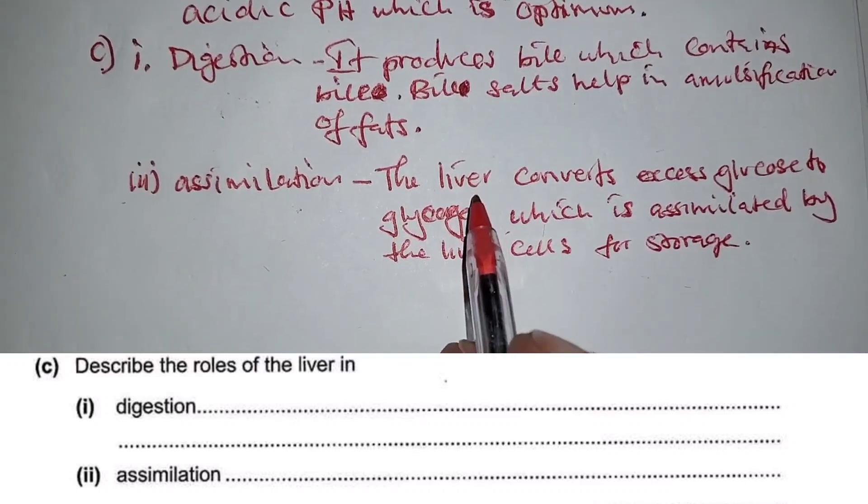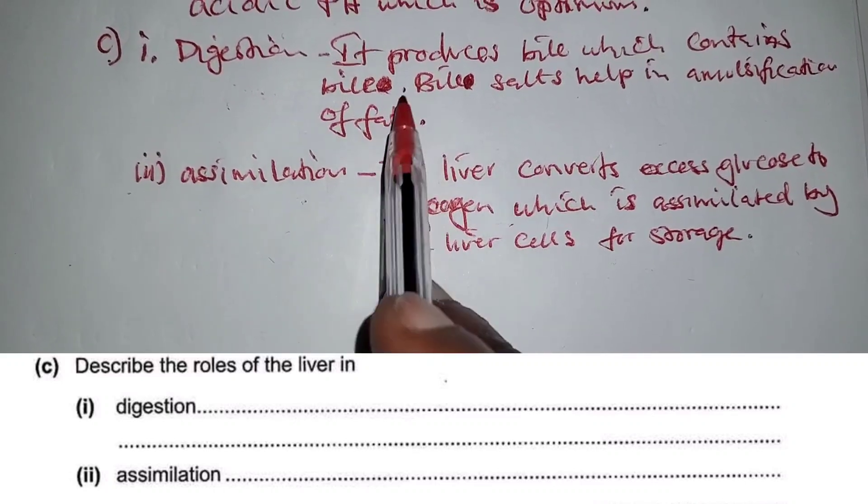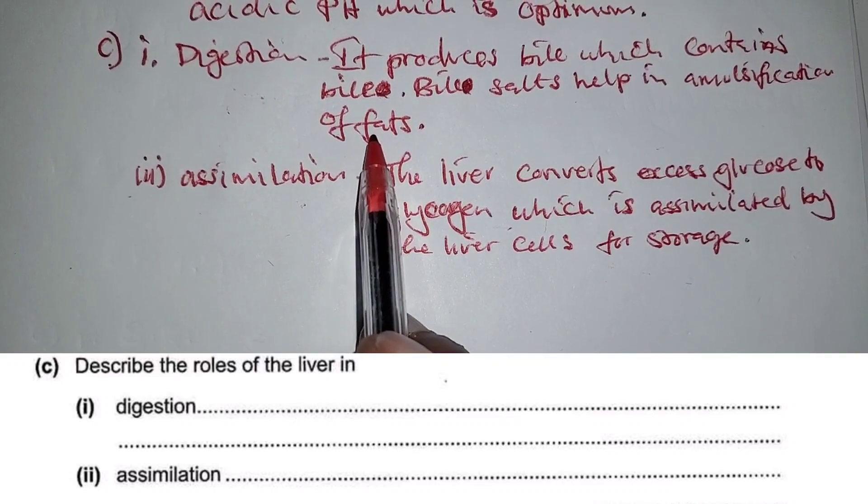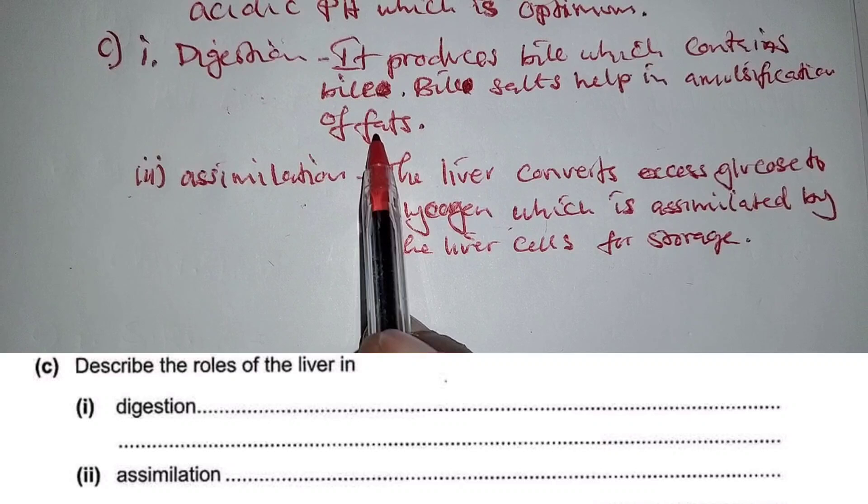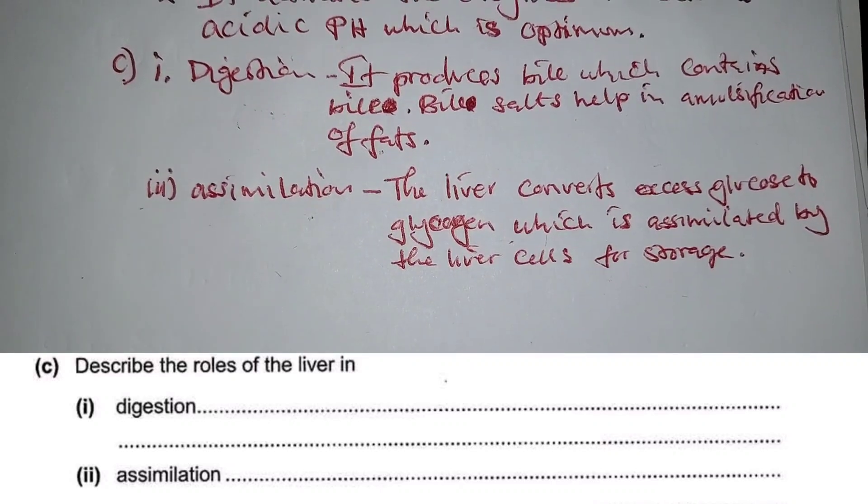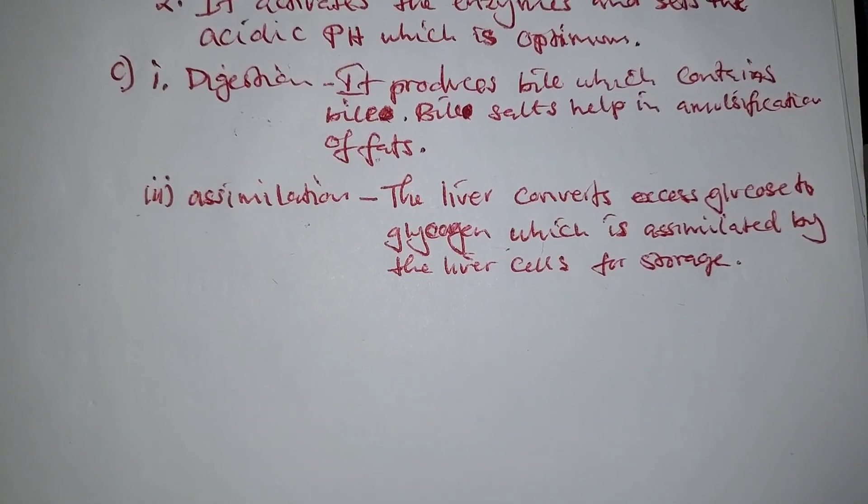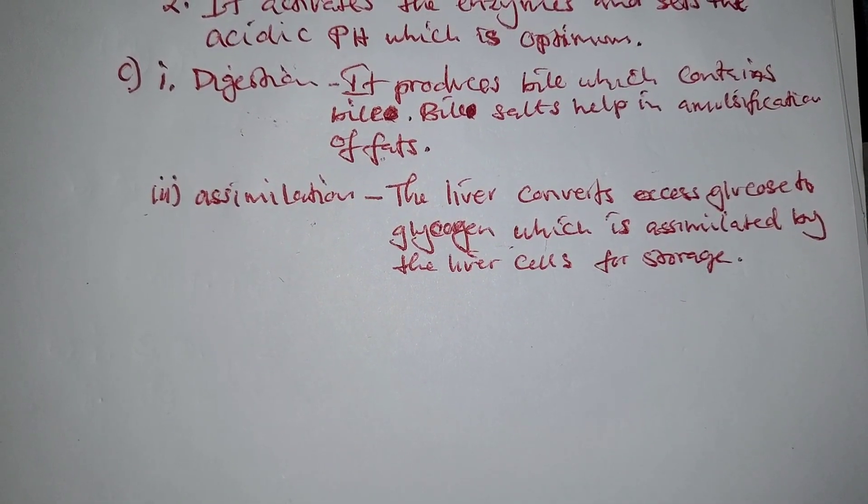And the fats, when they're broken down, the digestive end products are glycerol and fatty acids. Let's go to the next question. That's all to this question on digestion. Thank you so much.